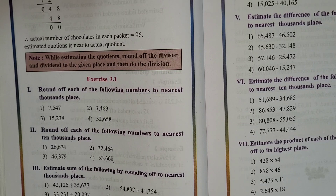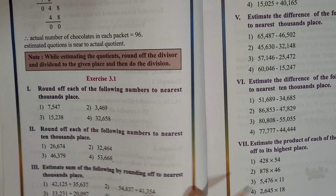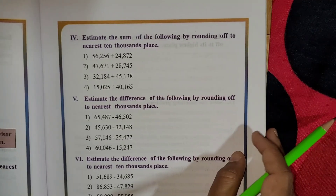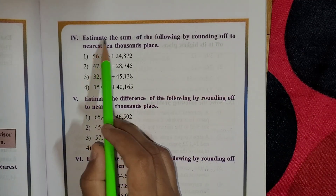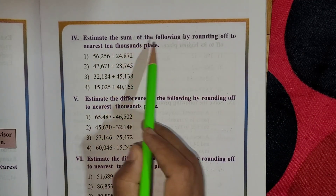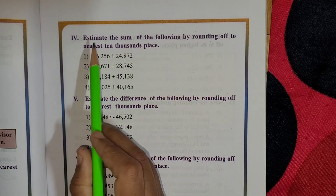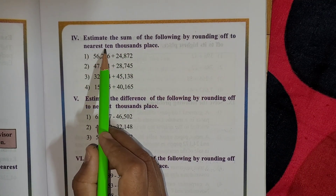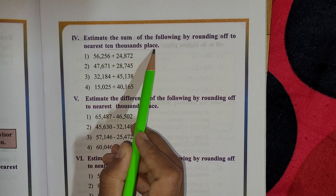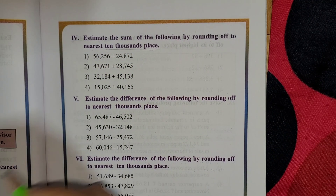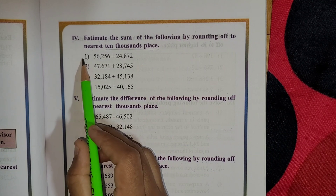Today in this class we are going to start with the fourth main, that is: estimate the sum of the following by rounding off to the nearest ten thousand place. Shall we start?